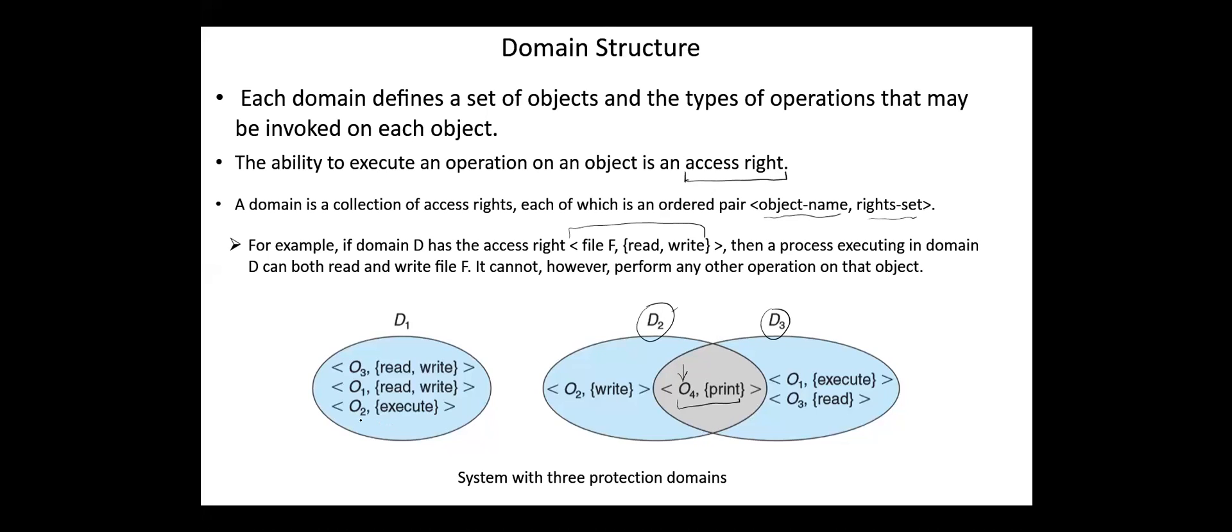To execute, for example, object 2, a process should be executing in domain D1. And to perform the write operation to object 2, a process should be executing in domain D2.